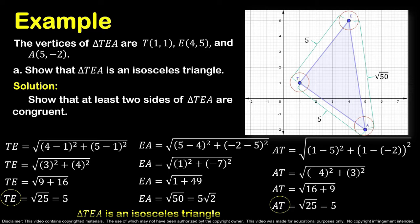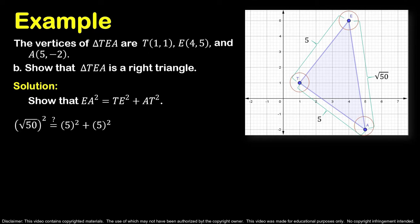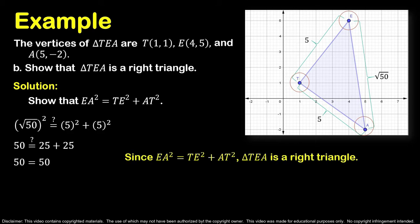Now, let us show that triangle TEA is a right triangle. In a right triangle, the square of the hypotenuse — the longest side — is equal to the sum of the squares of its legs, the two shorter sides. Let us show that EA² equals TE² plus AT². EA is the longest side since √50 is greater than 5. Substituting: 50 equals 5² plus 5², which gives 50 equals 25 plus 25 equals 50. Therefore, triangle TEA is a right triangle.